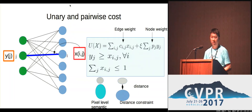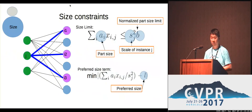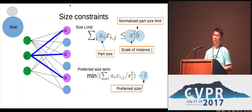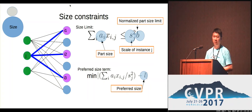By using the unary and pairwise constraints, we already encode pixel-level semantics into the network. We also encode distance constraints to ensure neighborhood body parts come together and are spatially close. Of course, this is not enough — we need high-order constraints. One is the size constraint: if we want to assemble something into a human instance, all body parts must have proportional size — otherwise you'd get something like a huge head with a small torso. We use a size limit constraint and also a soft constraint to indicate preferred body part sizes. The size constraint essentially introduces high-order constraints into the network.